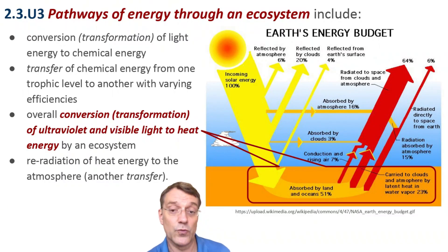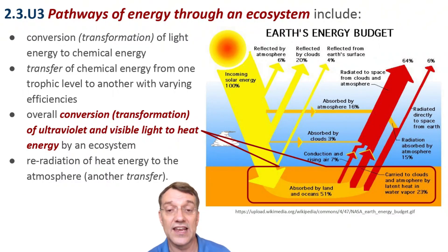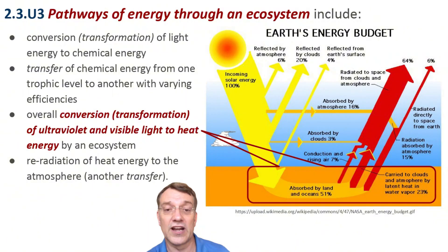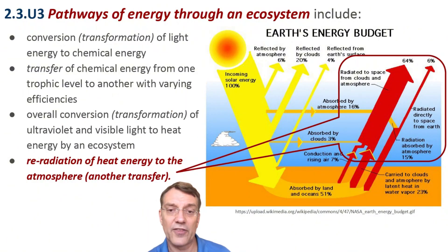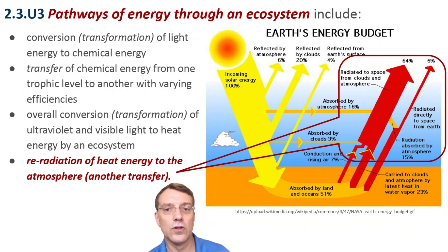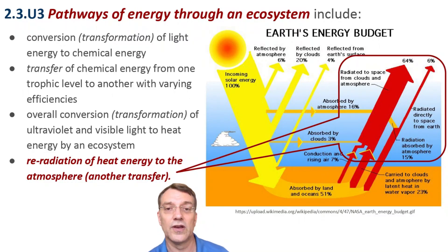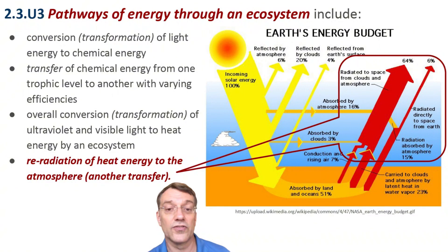A significant portion of solar energy is converted to heat. In this Earth energy budget, we can see how absorbed light is eventually re-radiated as infrared energy. This transformation follows the second law of thermodynamics, with energy becoming less concentrated and available. The final pathway for energy is re-radiation of heat to the atmosphere. Note the large red arrows showing energy leaving Earth's surface. This release of heat energy is important for maintaining Earth's temperature balance, and it drives weather patterns and ocean currents.